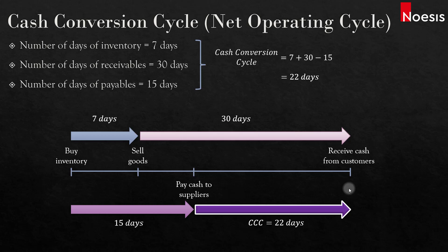During this period, the company needs to finance its investment in operations through other sources. It could be through debt, through equity, or the company may have excess cash it can use to pay the suppliers — but there will be an opportunity cost.